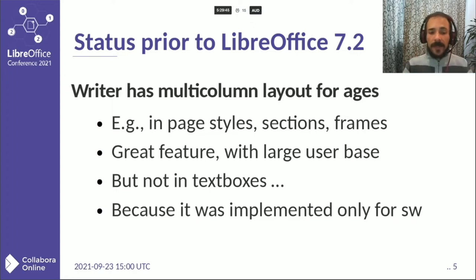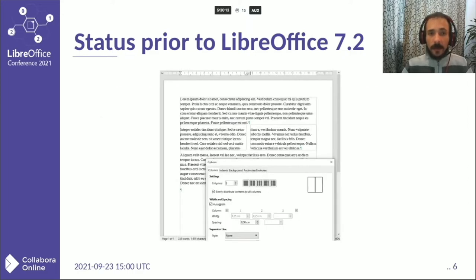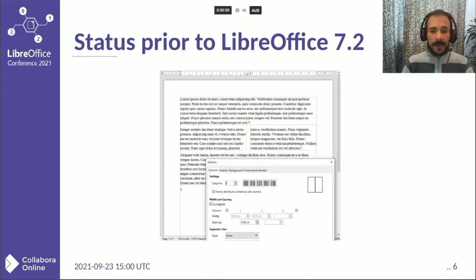In Writer's pages, in Writer's sections, in Writer's frames, you may use columns and set them very finely. But not in graphical objects like text boxes, shapes — all that uses Edit Engine, the component that does not rely on Writer's layout machinery. Here you see a text document with a section that uses two columns, and a dialog to configure the columns. You may see how rich the configuration is: you can set up distribution of the text or the form of the separator line, something that is absent in our competitors.